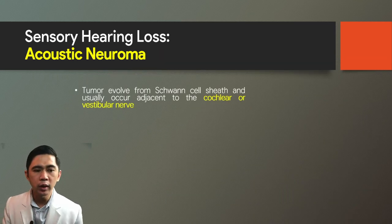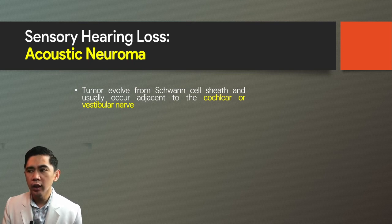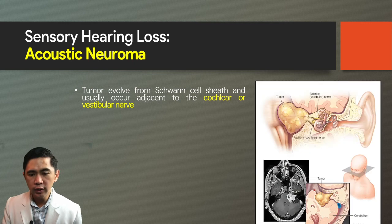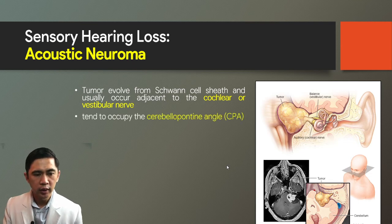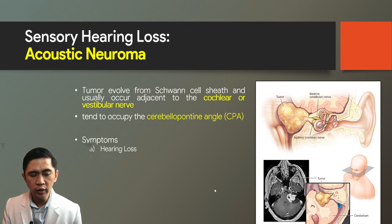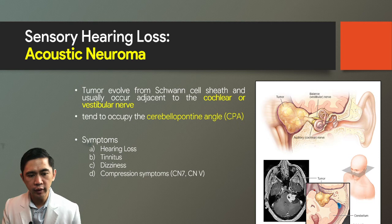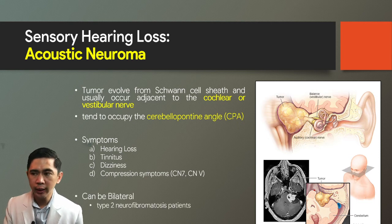Acoustic neuroma is a tumor arising from Schwann cell sheaths, usually occurring adjacent to the cochlear or vestibular nerve. It tends to occupy the cerebellopontine angle (CPA). Symptoms include hearing loss, tinnitus, dizziness, and compression symptoms of cranial nerves 7 and 5. Acoustic neuroma can be bilateral, especially in patients with type 2 neurofibromatosis.